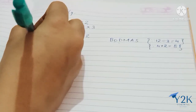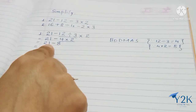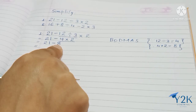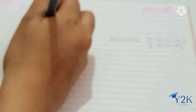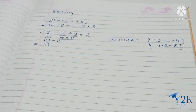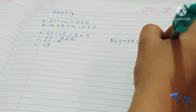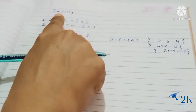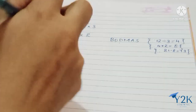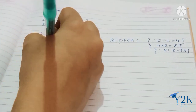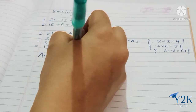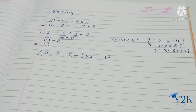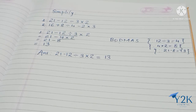Next step: as only one operation is left, it will be direct. 21 minus 8 gives us 13. You can mention that 21 minus 8 gives 13, so the answer of this sum is 13. Directly in the answer you can write: 21 minus 12 divided by 3 into 2 equals 13.